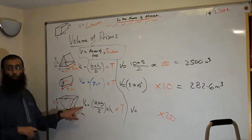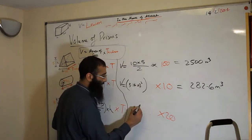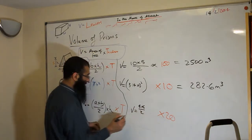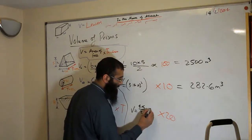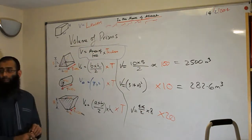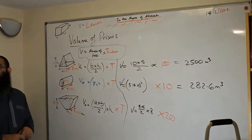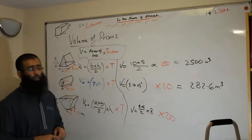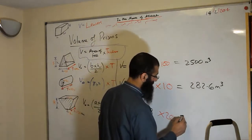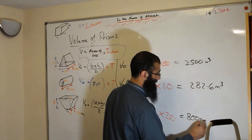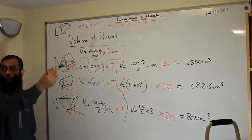The volume of the trapezoid prism: we add the parallel sides A and B — that's 4 plus 6 — divide by 2, multiply by the height of 8, then multiply by the thickness of 20. So 4 plus 6 is 10; 10 divided by 2 is 5; 5 times 8 is 40; 40 times 20 is 800. That's 800 centimeters cubed, because the measurements were in centimeters.